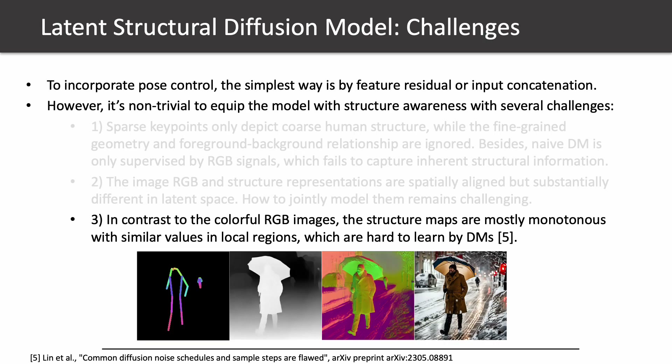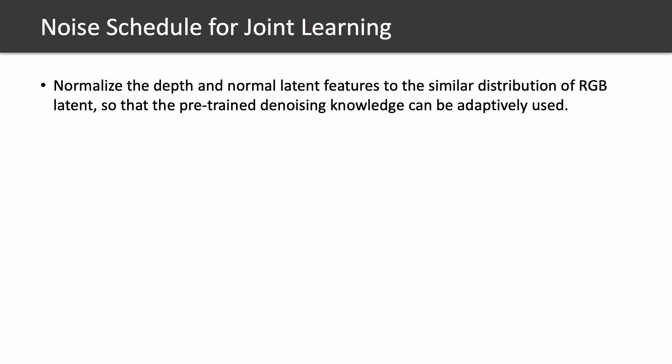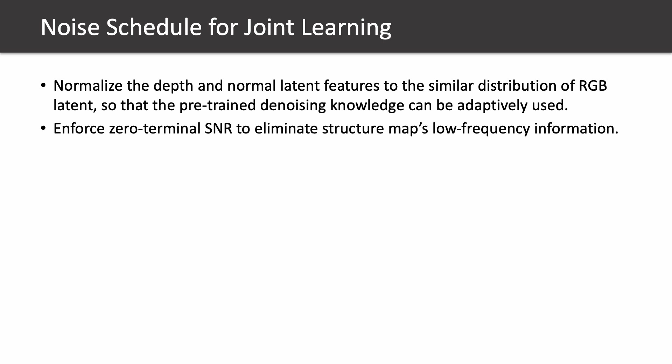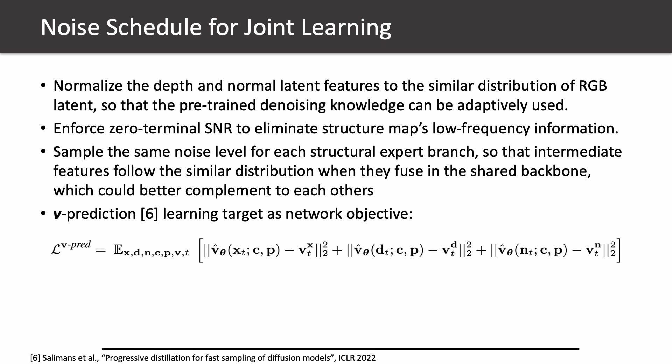Another problem arises when we inspect the distribution of depth and surface normal. In contrast to colorful RGB images, structural maps are mostly monotonous with similar values in local regions, which are hard to learn by diffusion models. To this end, we carefully design a noise schedule for joint learning. First, we normalize the depth and normal latent features to a similar distribution as RGB latent so that pre-trained denoising knowledge can be adaptively used. Second, we enforce zero-terminal SNR to eliminate structural maps' low-frequency information. Third, we propose to sample the same noise level for each structural expert branch. The V-prediction is used as the learning target for network training.